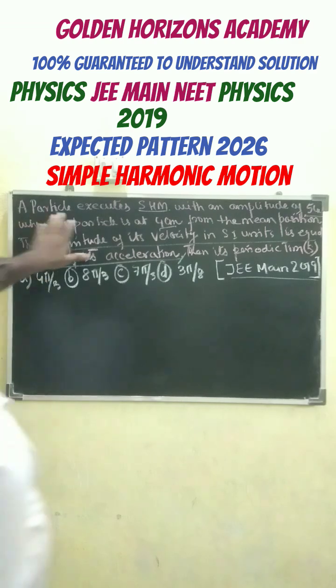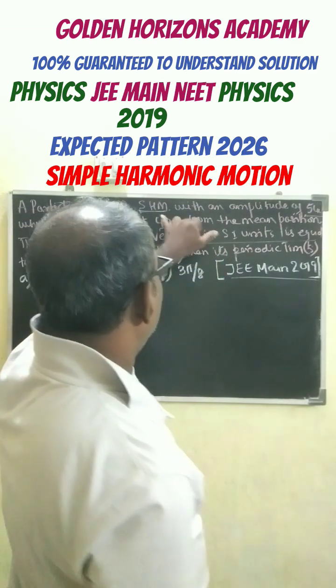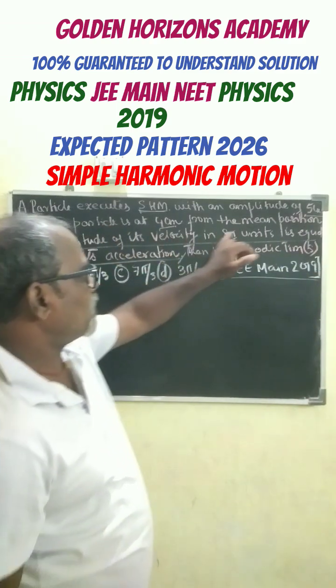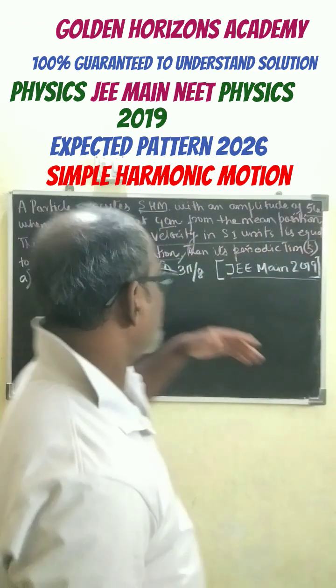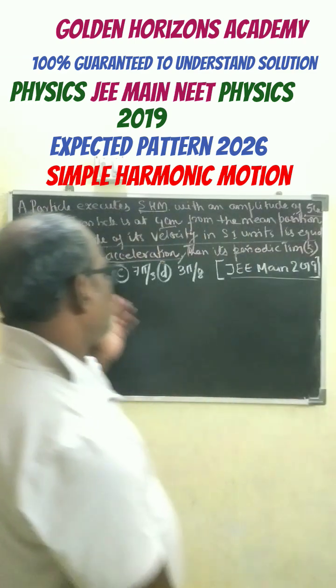Let's go with the question. A particle is in simple harmonic motion with an amplitude of 5 centimeters. When the particle is 4 centimeters from the mean position, the magnitude of its velocity is equal to the acceleration during that time.